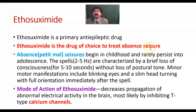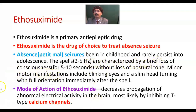What is absence or petit mal seizure? This type of seizure begins in childhood and rarely persists into adolescence. The spell is brief and characterized by a brief loss of consciousness for five to ten seconds without loss of postural tone. Minor motor manifestations include blinking of eyes and slight head turning, with full orientation immediately after the spell.